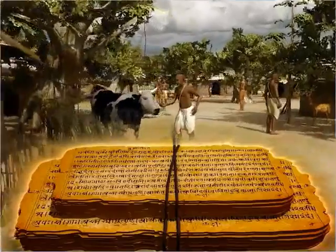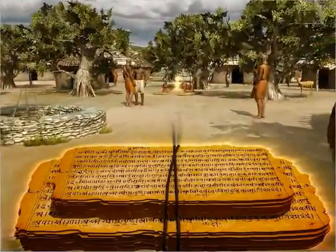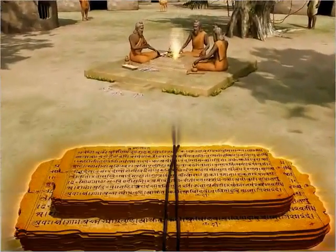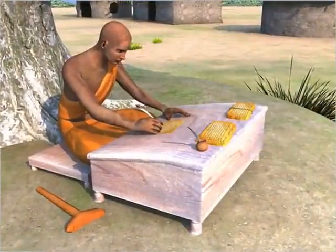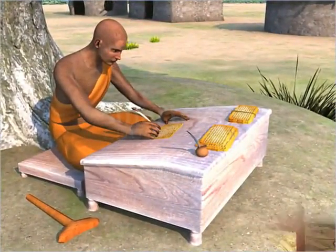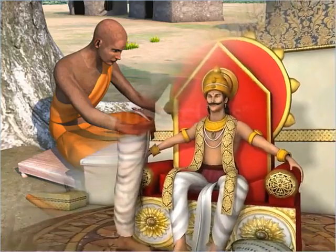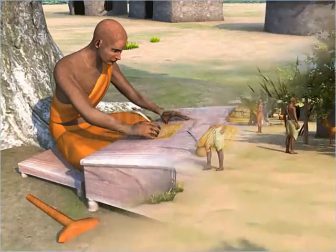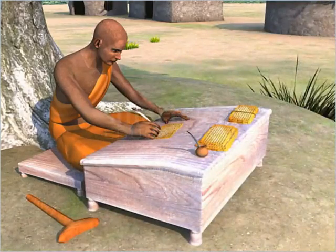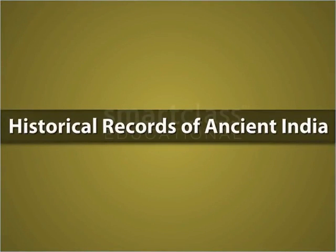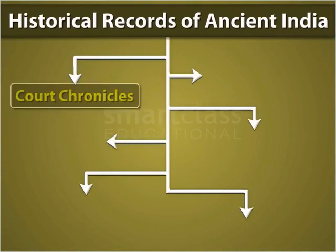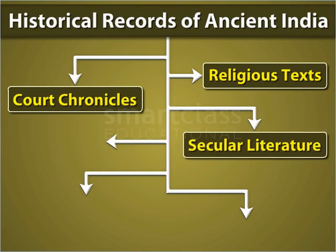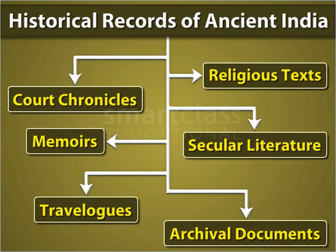Written historical records of ancient India provide a fairly good idea about the life and culture of the people in the past. Historians often use primary sources such as literary and documentary evidences to determine the political, economic, social and cultural dimensions of the past. Historical records of ancient India can be broadly classified into court chronicles, religious texts, secular literature, memoires, travelogues and archival documents.